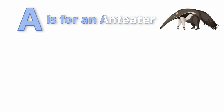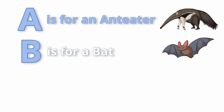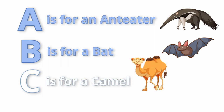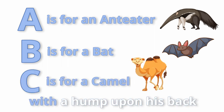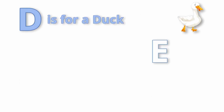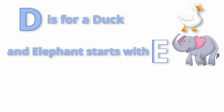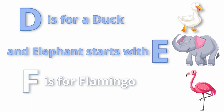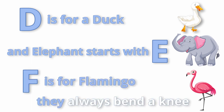A is for an anteater. B is for a bat. C is for a camel with a hump upon his back. D is for a duck. An elephant starts with E. F is for flamingo. They always bend their knee.